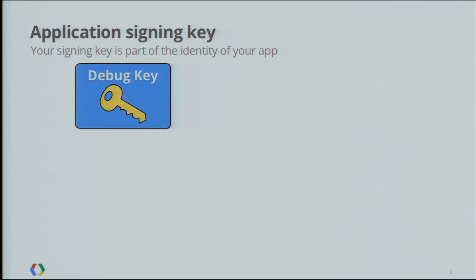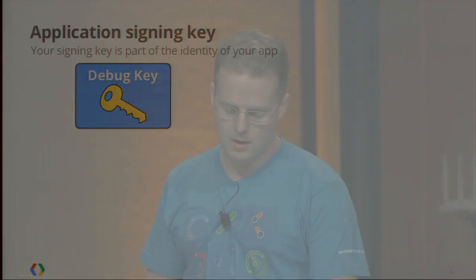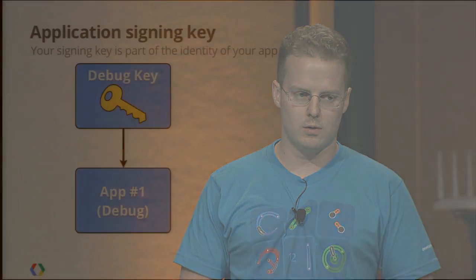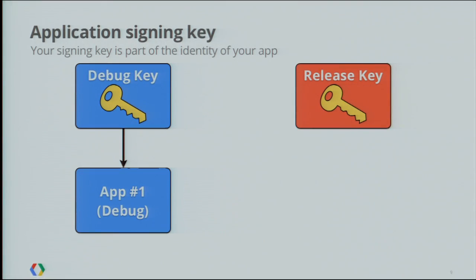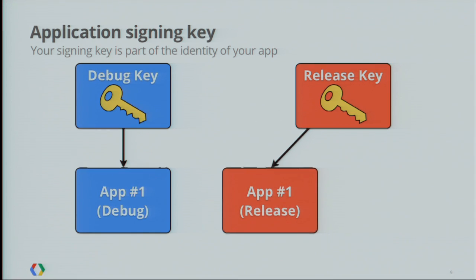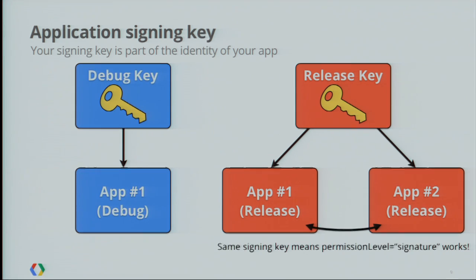Next, we're going to talk about the app signing key. Any app installed on an Android device must be signed with a private key before it's allowed to be installed. If you're distributing your app in Google Play or sending it via email, you have to generate a release key — this is a unique key to your app, and any update you want to provide must be signed with the same key. Another cool property of this key is if you sign multiple apps with the same key, you can use shared user IDs between the apps, or use a permission level of signature, which we'll talk about later.